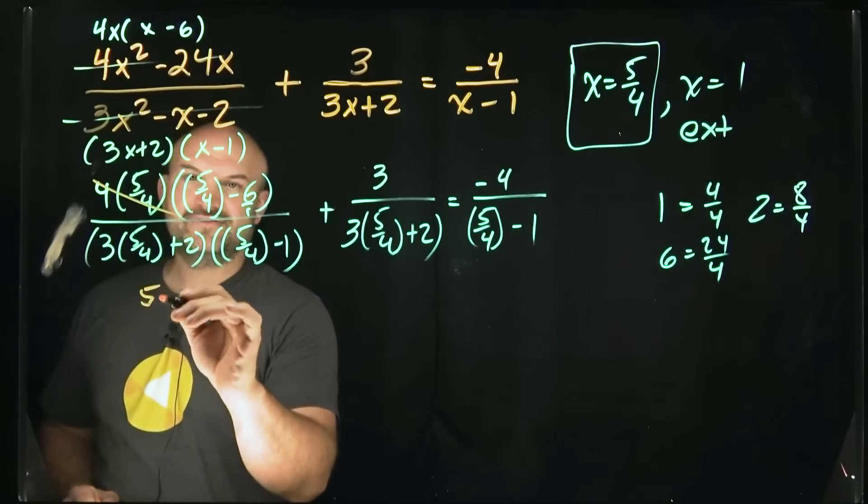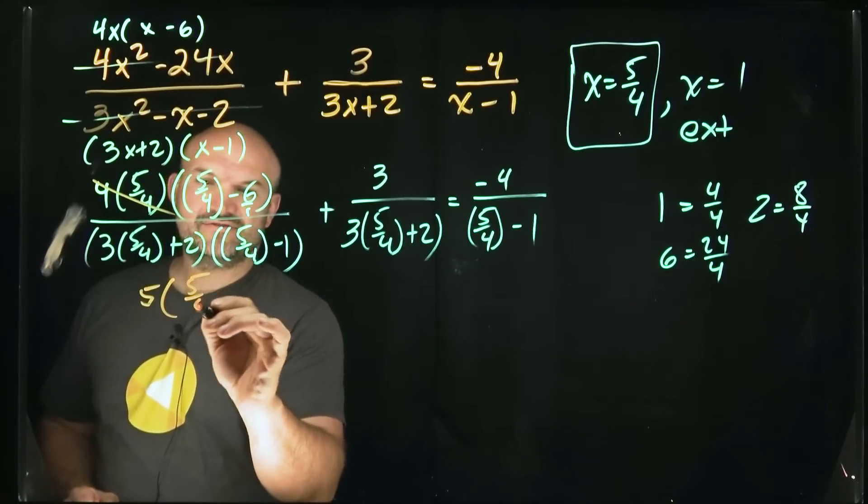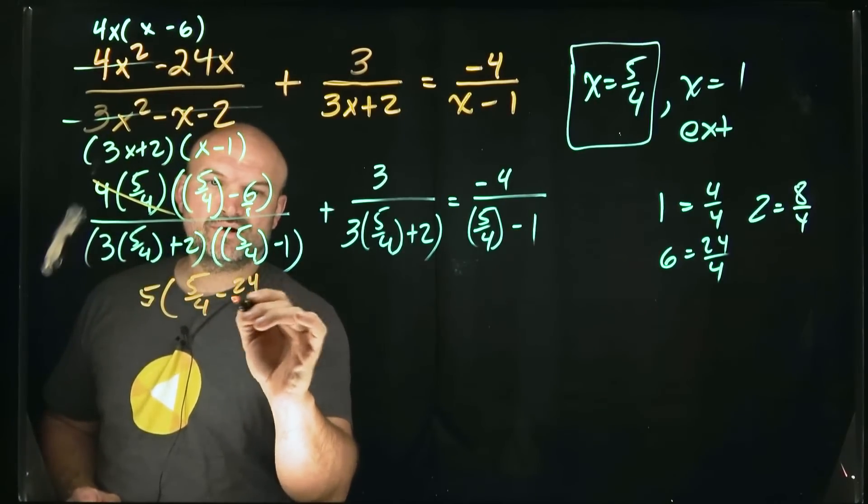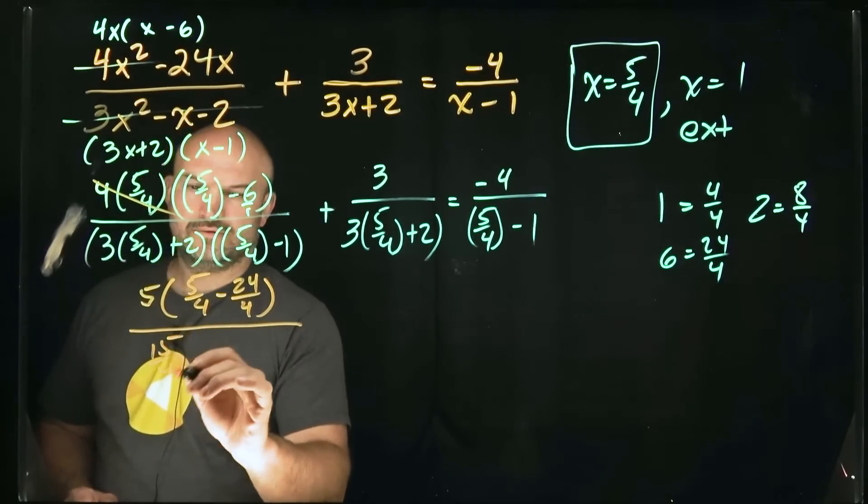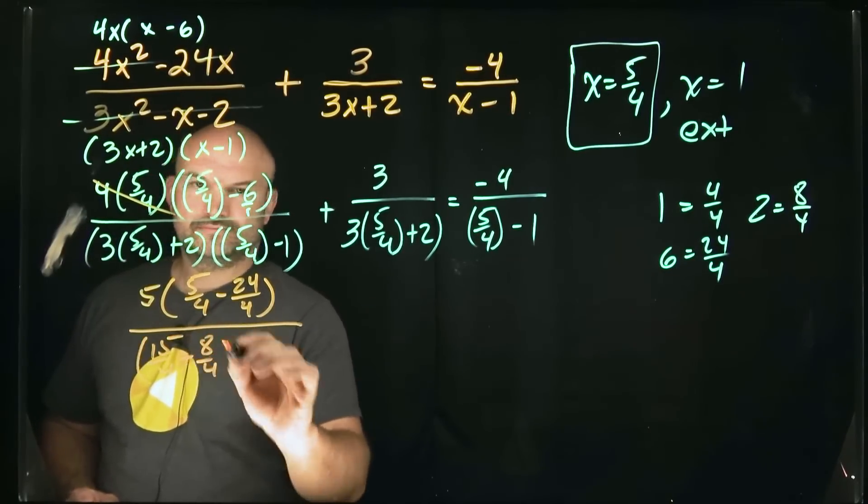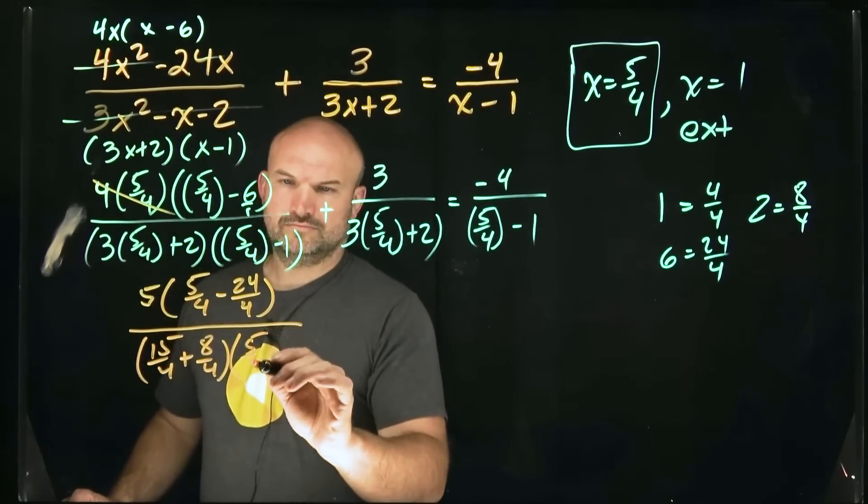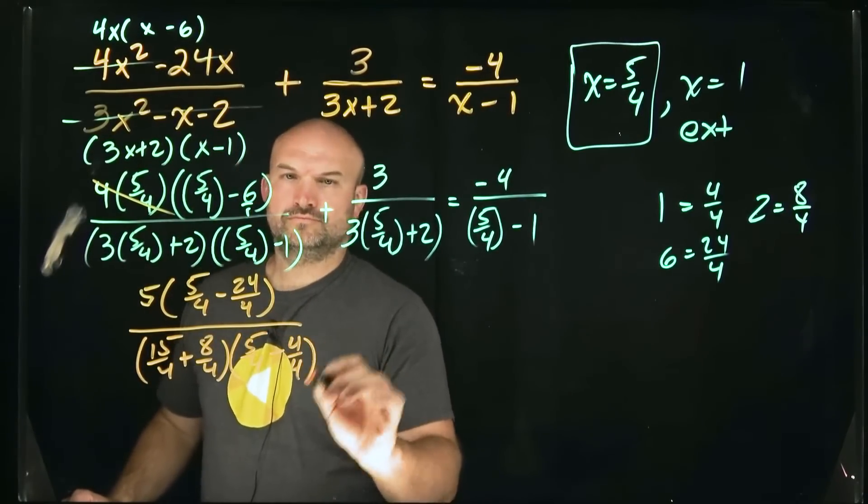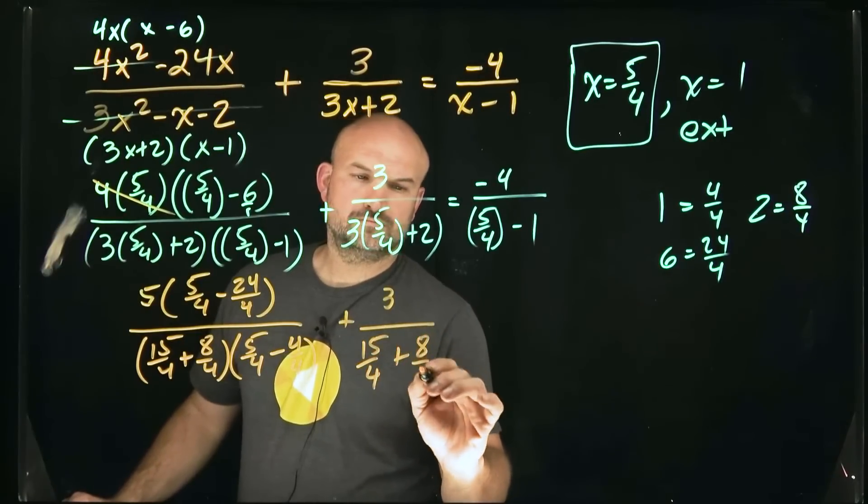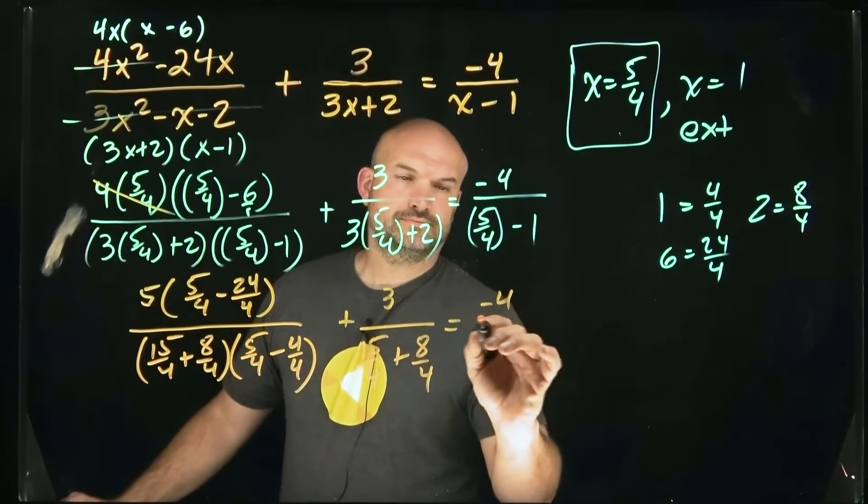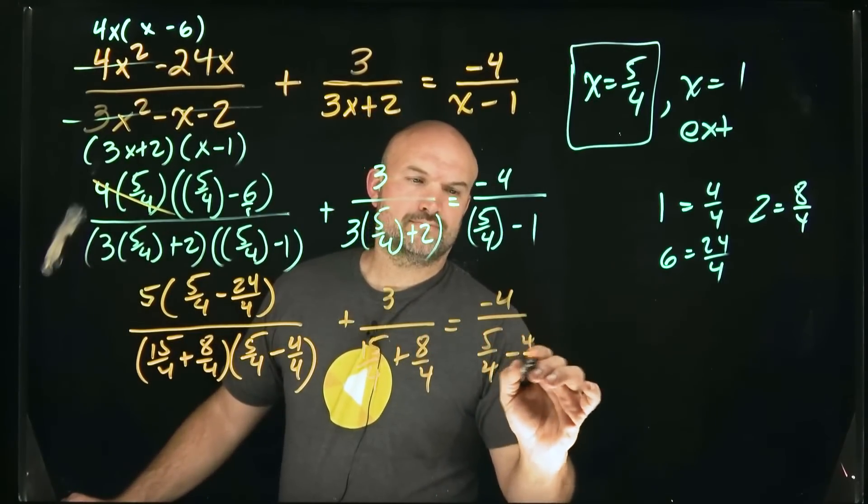So that's going to leave me with five times, let's see, five-fourths minus 24 fourths.